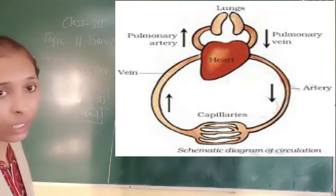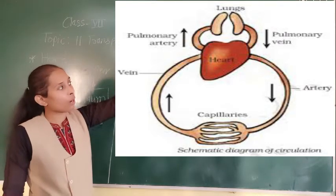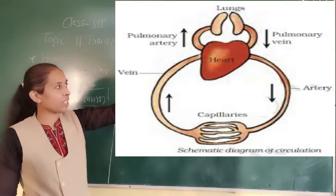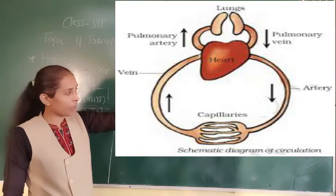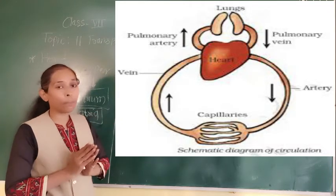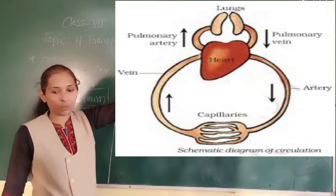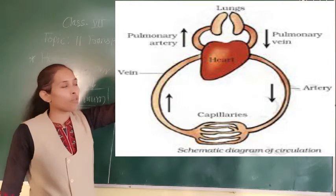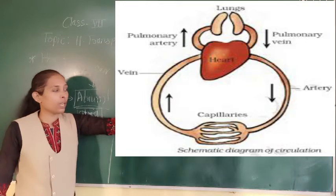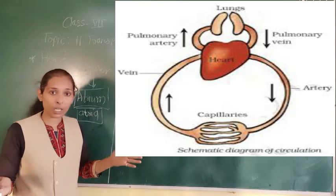From the lungs, the oxygen-rich blood comes into the heart. From the pulmonary vein, it goes into the arteries, and through the arteries it goes into the capillaries. From the capillaries, it is transported to the different parts of the body.